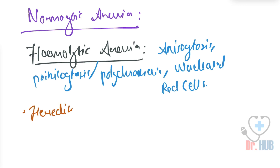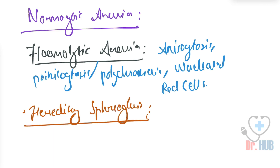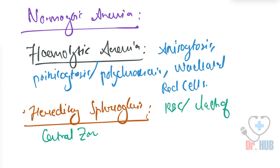Next is hereditary spherocytosis. In hereditary spherocytosis, the peripheral smear shows RBCs with lack of central zone of pallor, along with reticulocytosis.